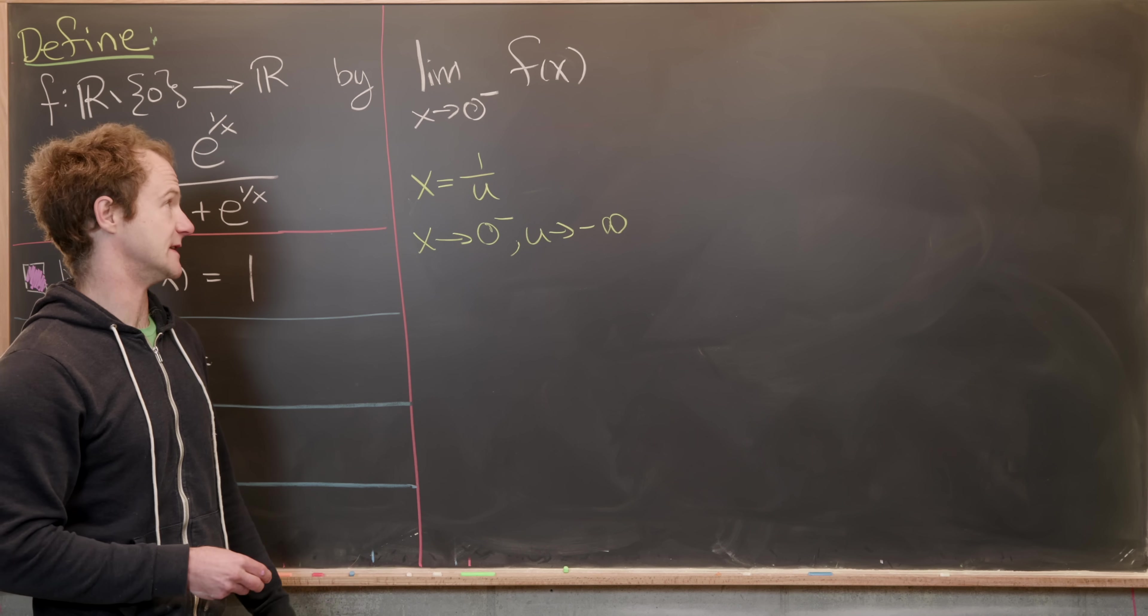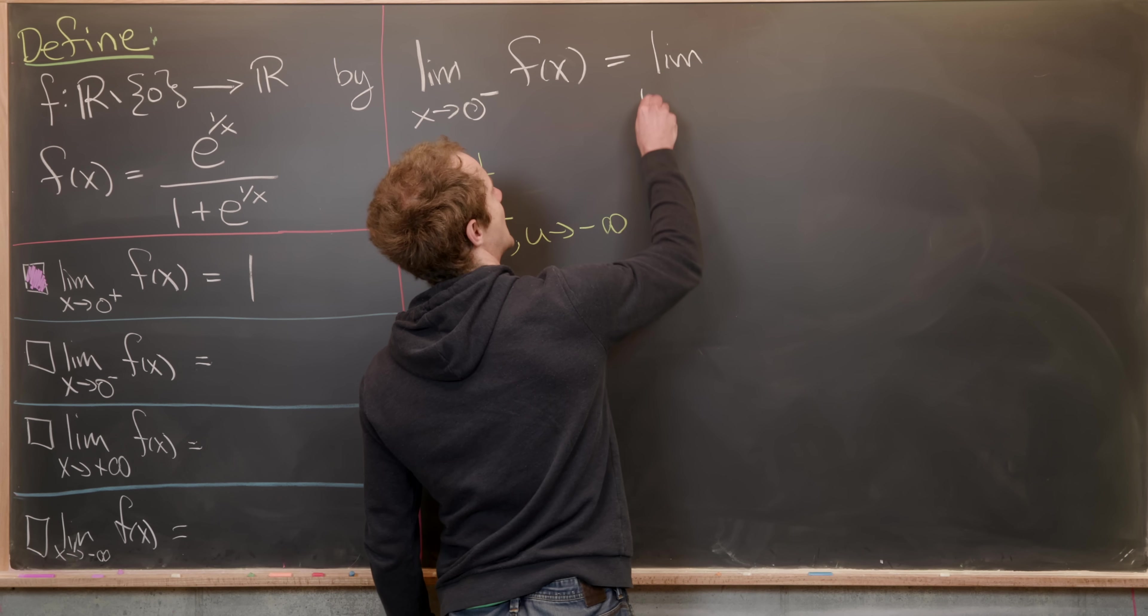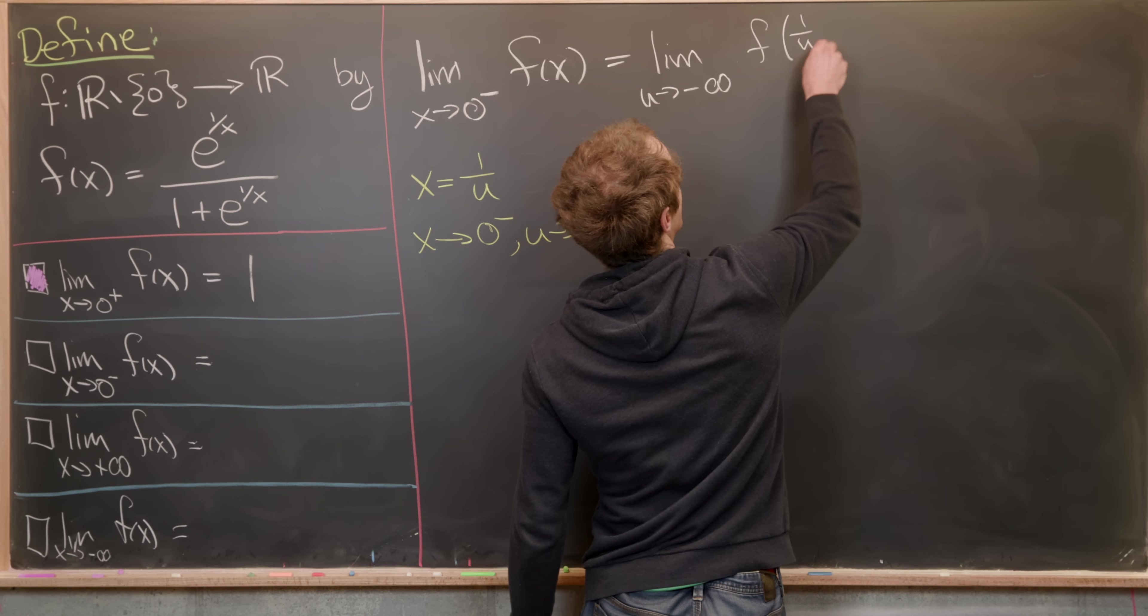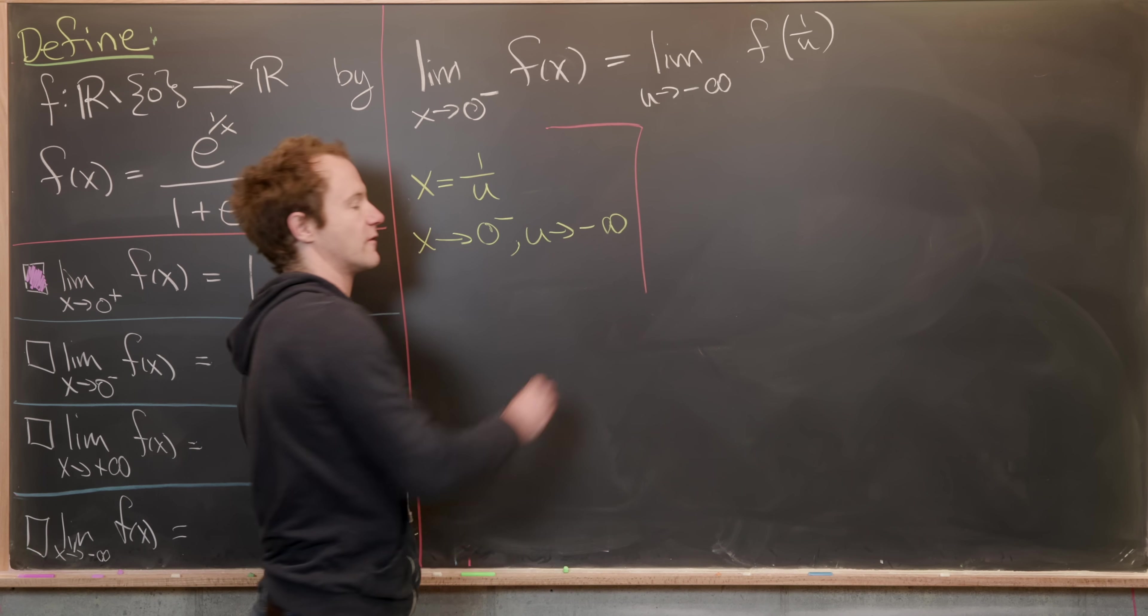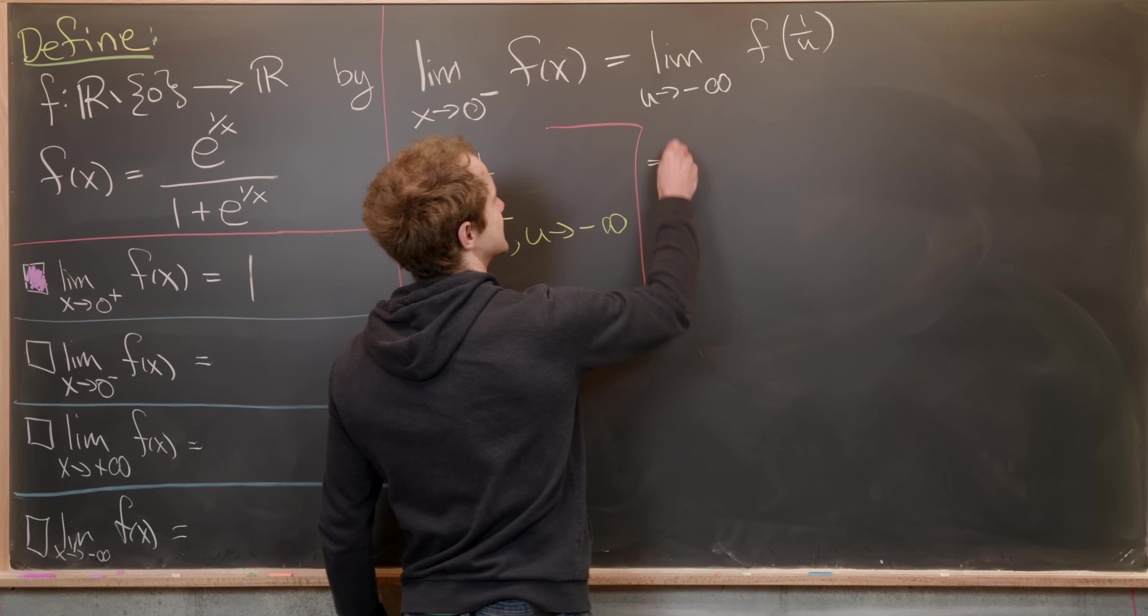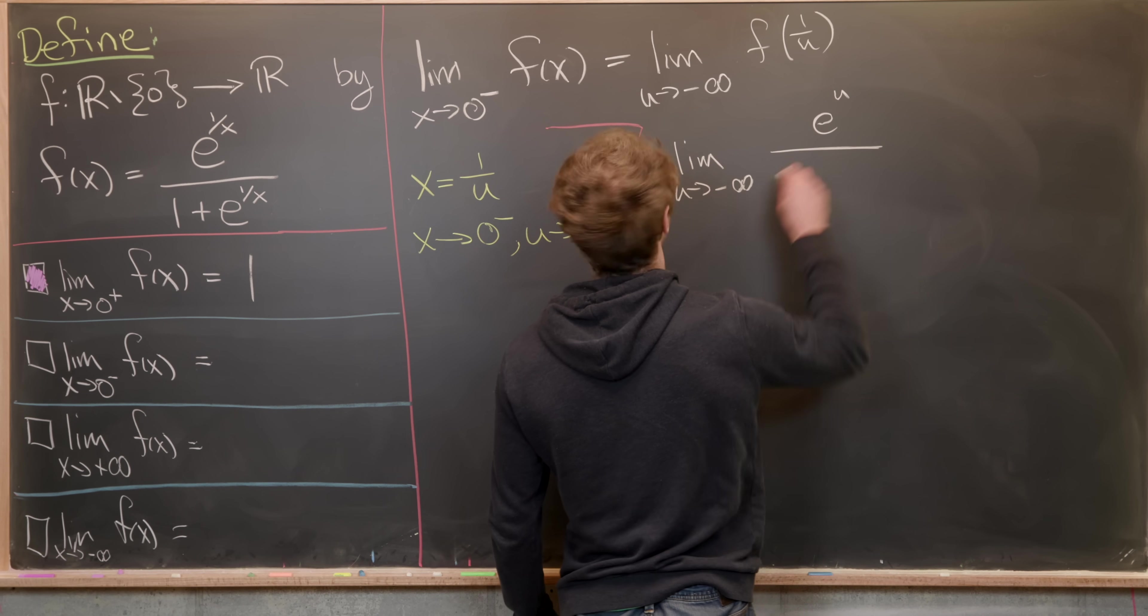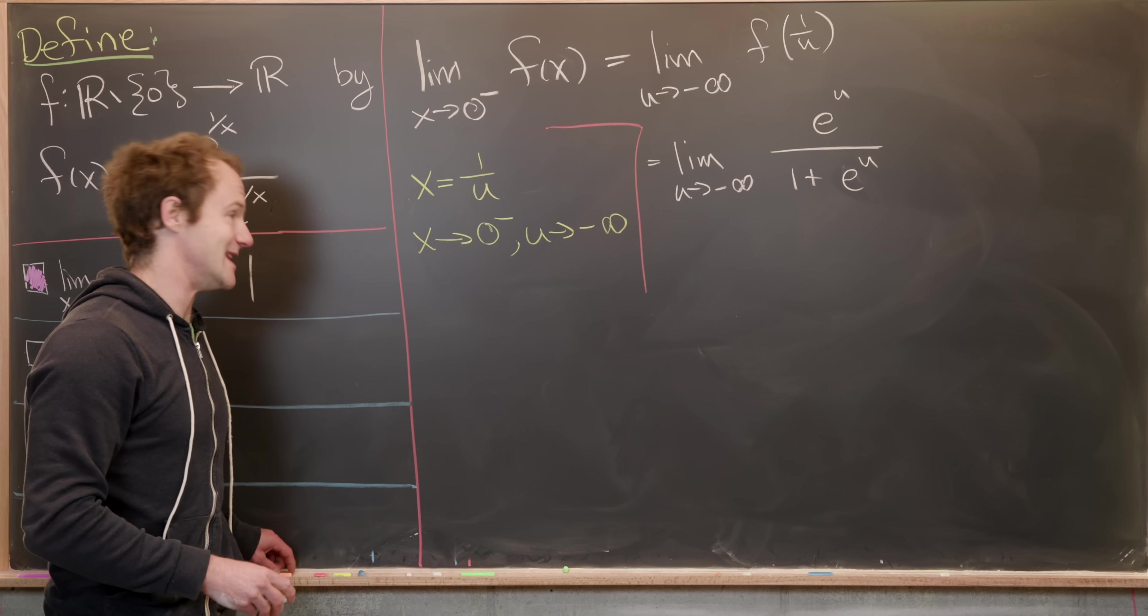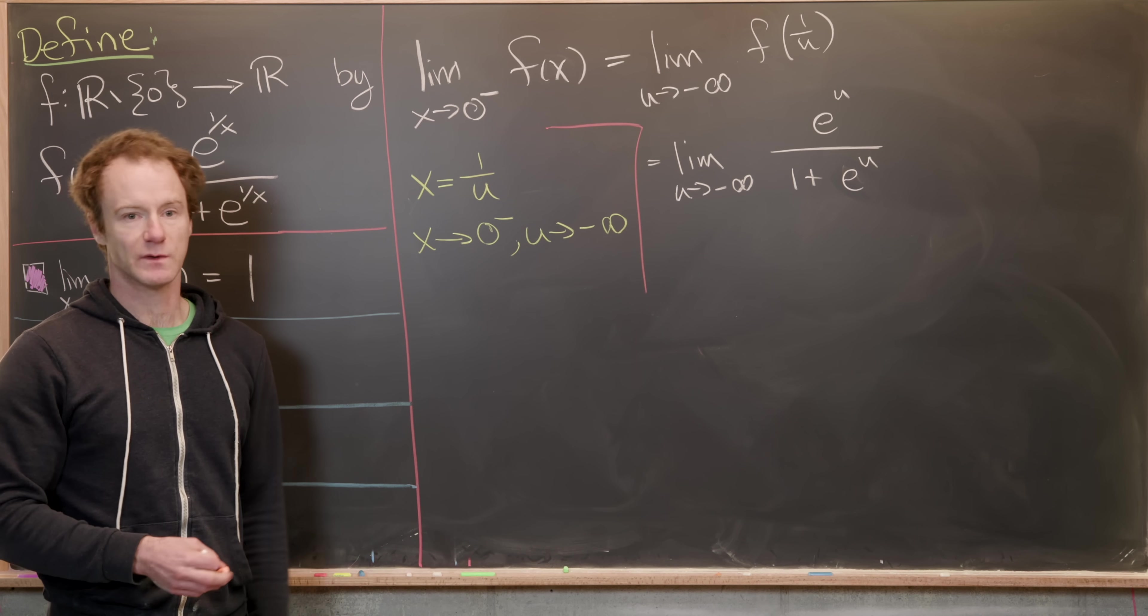So that's pretty easy to see. Now we can change this from an x limit to a u limit, we've got the limit as u goes to negative infinity of f of one over u like that. Then we can plug one over u into our function as defined over here. That gives us the limit as u goes to minus infinity of e to the u over one plus e to the u. But in this case, this is not an indeterminate form. As u approaches minus infinity, e to the u approaches zero.